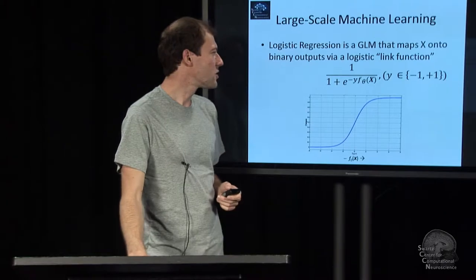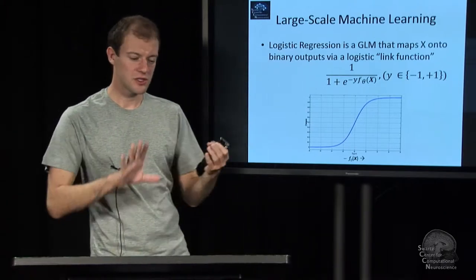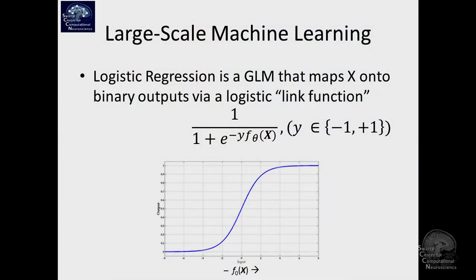And we're going to look at one specific case of such a mapping, linear mapping, or generalized linear mapping, from an observation x onto an output y. We will say the output is, we will declare y here as either plus 1 or minus 1, positive or negative class. There's generalizations from multiple classes. We're not going to cover these here.